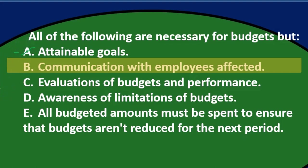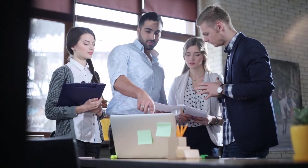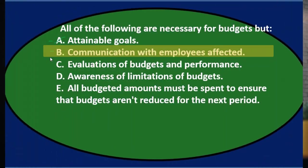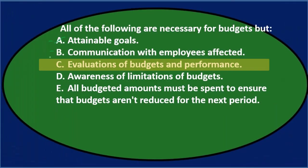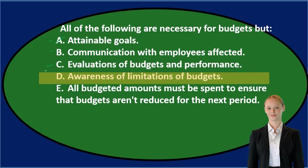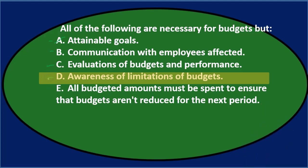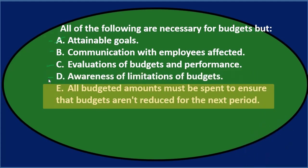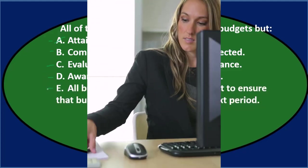Communication with employees — you would think that's something you'd want to do, but maybe it's not mandatory. I would keep that for now. C says evaluations of budgets and performance, which is part of the budgeting process, so I'd think that would be reasonable. D says awareness of limitations of budgets — we probably want that as well. E says all budgeted amounts must be spent to ensure that budgets aren't reduced for the next period. That sounds a little weird. That might happen in practice, but it doesn't seem like the proper way of doing things.